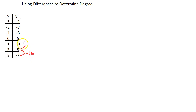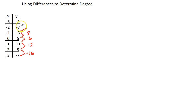Then I am going to take 9 minus 11, which gives me negative 2. Then I will take 11 minus 5, which gives me 6. Then I will take 5 minus negative 3 — double negative becomes a plus — giving me 8. Then negative 3 minus negative 7 gives me 4. And negative 7 minus negative 1 gives me negative 6. If all of these first differences were the same number, we would say this is linear. These are our first differences.